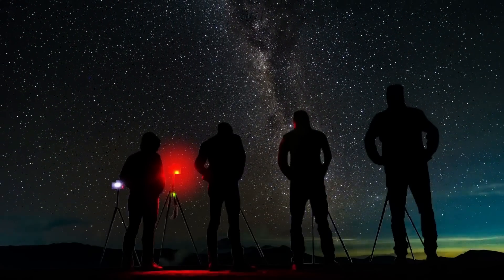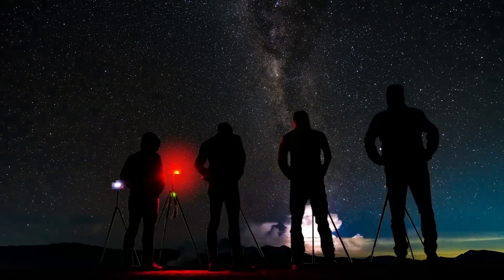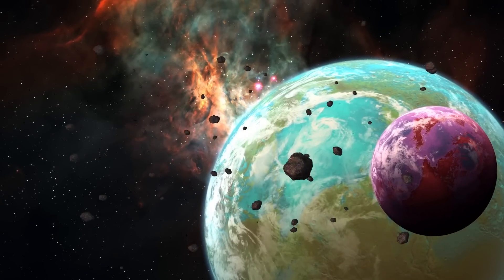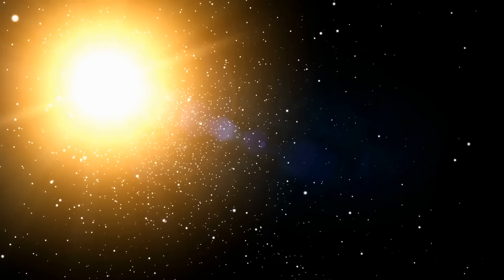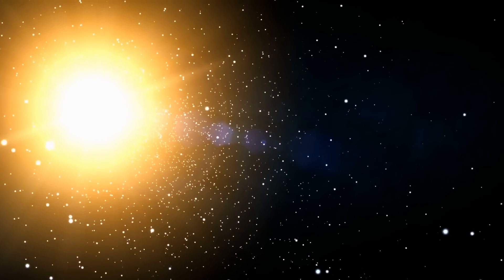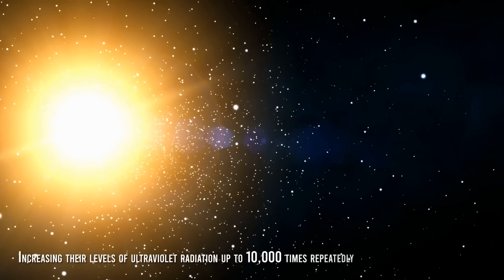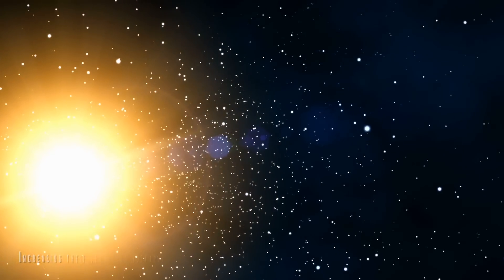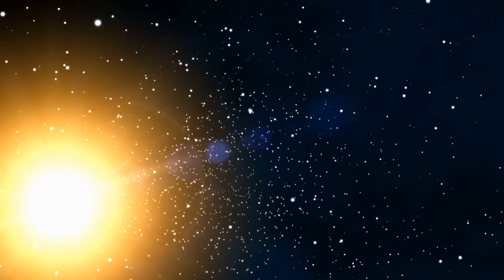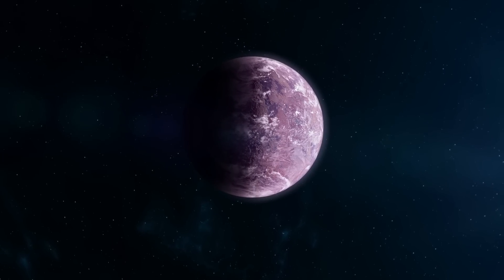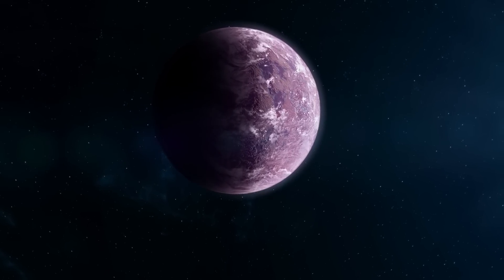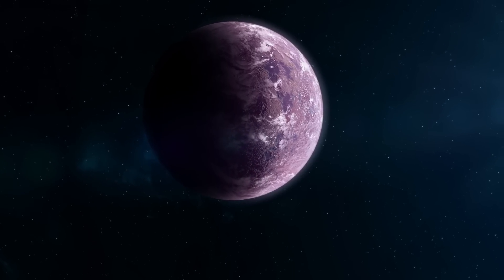However, the potential for life of red dwarfs is the subject of debate among the scientific community, since they present serious problems for life to arise on any rocky planet that orbits one of them in its habitable zone. In their first billions of years of life, they are highly active, increasing their levels of ultraviolet radiation up to 10,000 times repeatedly throughout an Earth day due to their violent flares. Models suggest that an Earth-like planet orbiting one of these stars in its habitable zone would gradually lose its atmosphere, even if its magnetosphere were similar to our planet.